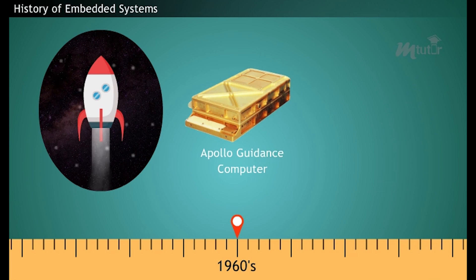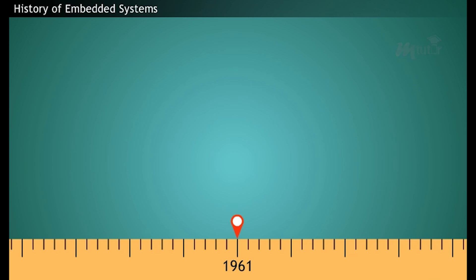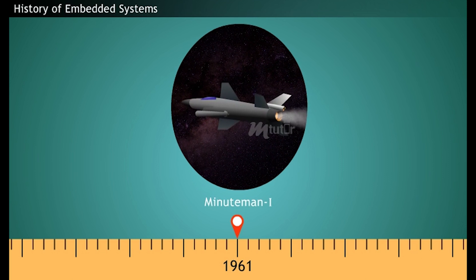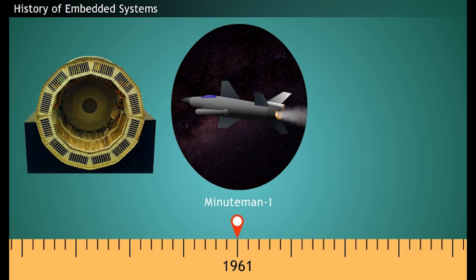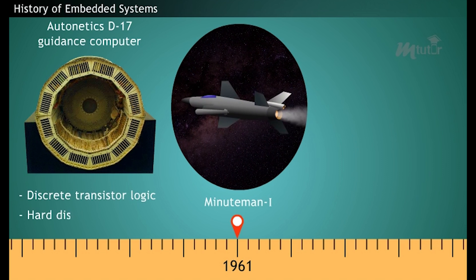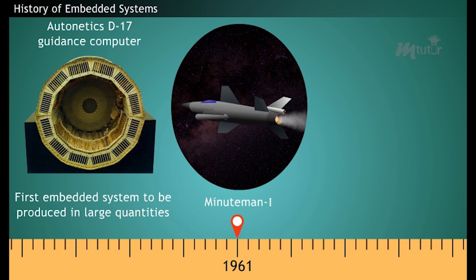Later, in 1961, another one crucial military project was initiated. It was the Minuteman Missile 1. For this, the Autonetix D-17 Guidance Computer was developed. It was built from the discrete transistor logic and had a hard disk as its main memory. It was also the first embedded system to be produced in large quantities.